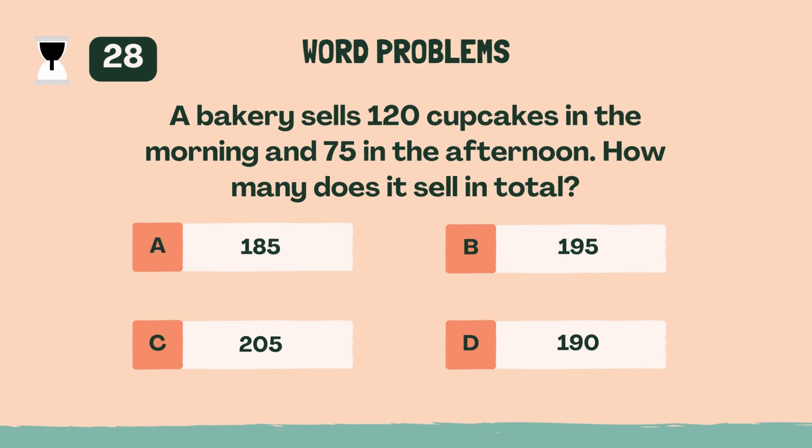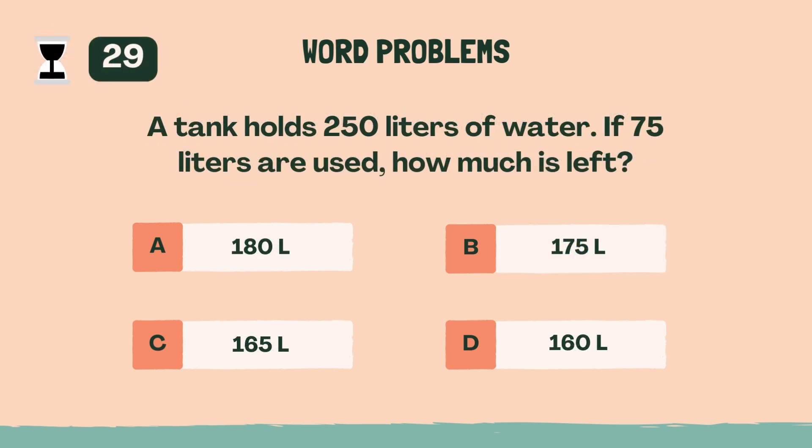A bakery sells 120 cupcakes in the morning and 75 in the afternoon. How many does it sell in total? B, 195.